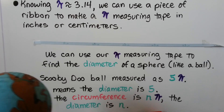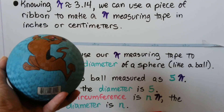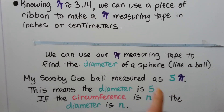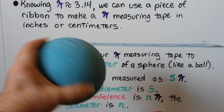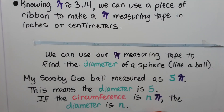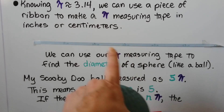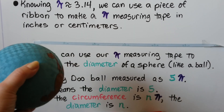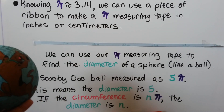I used my pi measuring tape to measure my Scooby-Doo ball. It measured as 5 pi when I wrapped the ribbon around the circumference of the ball, which means the diameter is 5. If the circumference is n pi, the diameter is n. So whatever number on my pi measuring tape comes out — even if it was 7.75 pi — I know the diameter is 7.75.